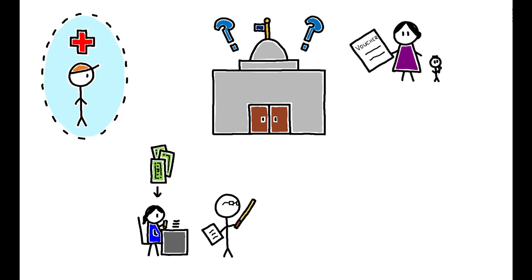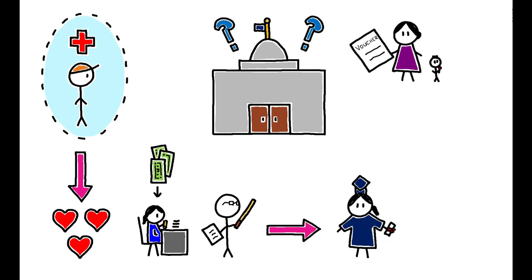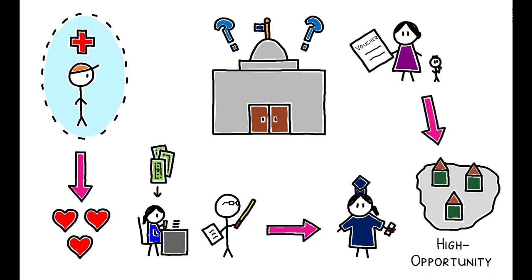If we know that expanding health insurance improves mortality, but also that financial aid increases college attendance, and that housing vouchers allow families to move to better neighborhoods, how do we decide where the government should invest its resources?